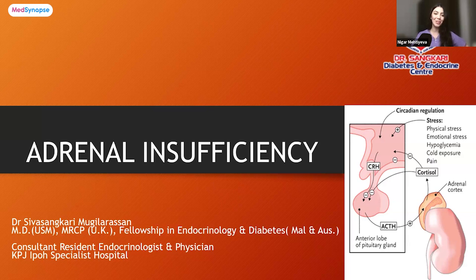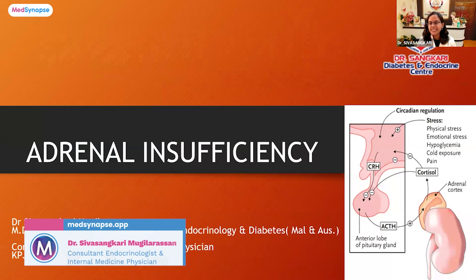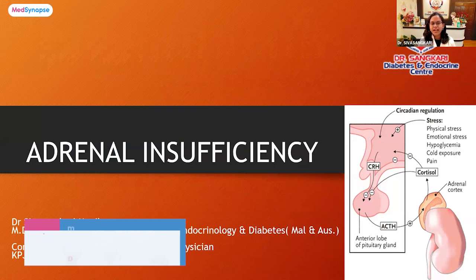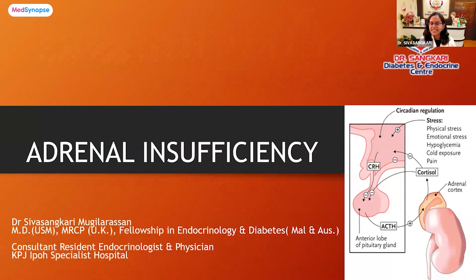Thank you for the kind introduction, Dr. Nigar. Today I will walk through the topic of adrenal insufficiency. As we know, the adrenal cortex produces a crucial hormone called cortisol, which helps to regulate stress in our body. During acute stress situations, the body goes through tremendous physical and emotional stress, and patients need cortisol to regulate and maintain blood pressure, blood sugar, and electrolytes.